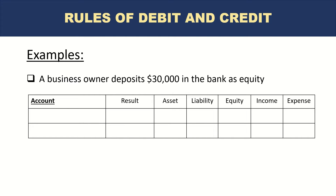The key in accounting is to understand the dual impact that every transaction has. What will be the accounts impacted by this entry? You can clearly see there is an entry in the bank, so one account is an asset, which is cash. In accounting, we use the term cash roughly to also refer to money in the bank. The other account you can see in the example is equity — this initial deposit is made by the owner of the business as equity.